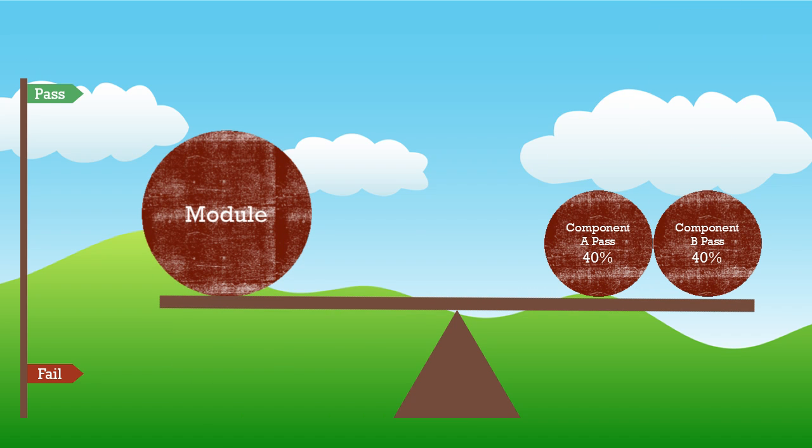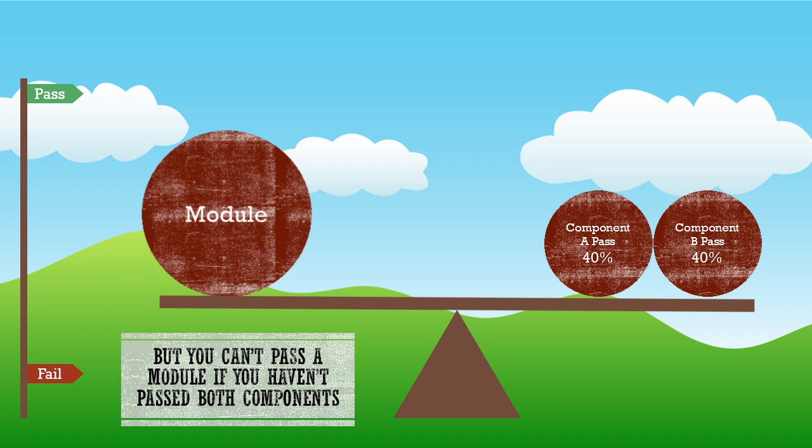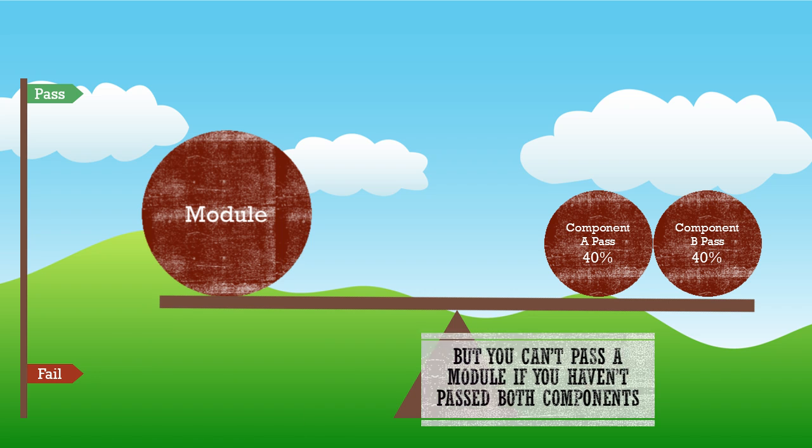As you can see, if you get 40% for each of your components A and B, you pass the module. But you can't pass a module if you haven't passed both components. If you fail a component, you have to re-sit it.